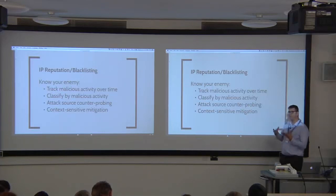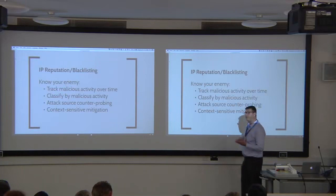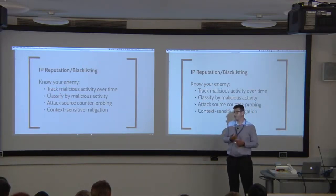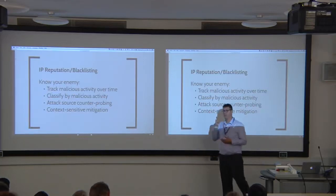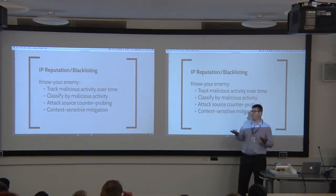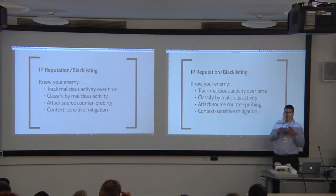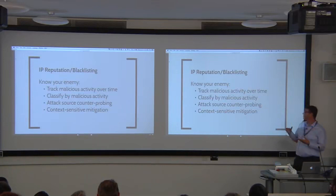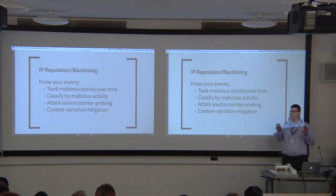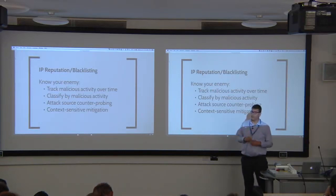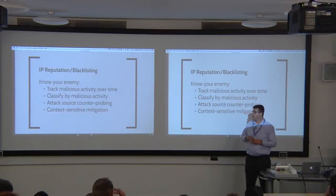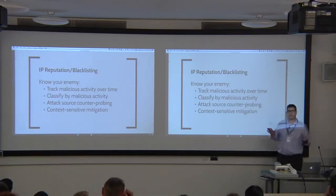I should also do counter-probing on those malicious actors: figure out their geographical location, check if they're coming from a proxy or anonymous server, and check if they are web servers — because web servers are not supposed to send traffic to other web servers. Once I do all those things, I'll have context-aware mitigation. I can apply different mitigations to different attackers. If someone is doing scraping or DDoS, maybe I start with rate limiting; if someone is doing persistent SQL injection, maybe I should just block them entirely.